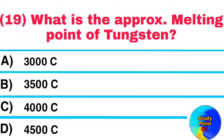Question No. 19. What is the approximate melting point of tungsten? Answer: 3500°C.